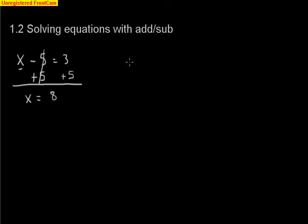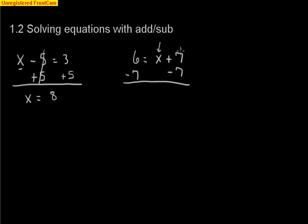Another quick example where the variable is on the other side: 6 is equal to x plus 7. What's happening to x? We have 7 being added to it. The inverse operation of adding 7 is subtracting 7, so we subtract 7 from both sides. The 7s cancel and we're left with x. Then 6 minus 7 gives us negative 1 for our answer.